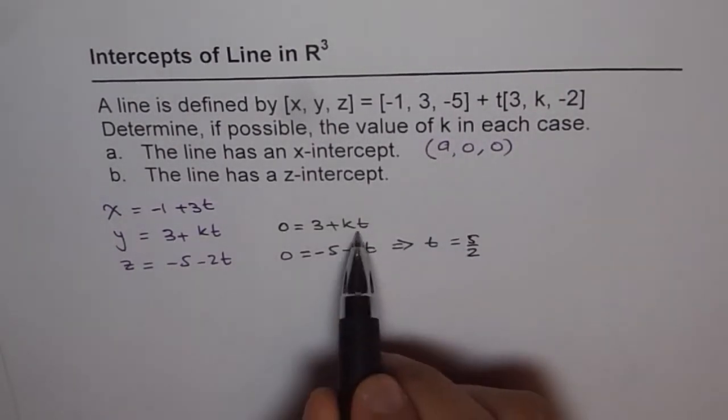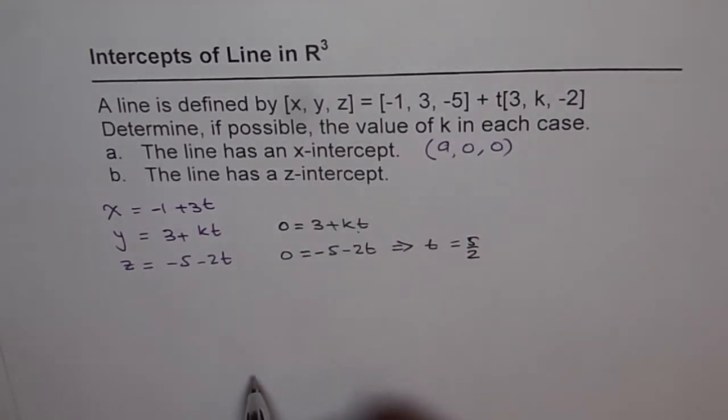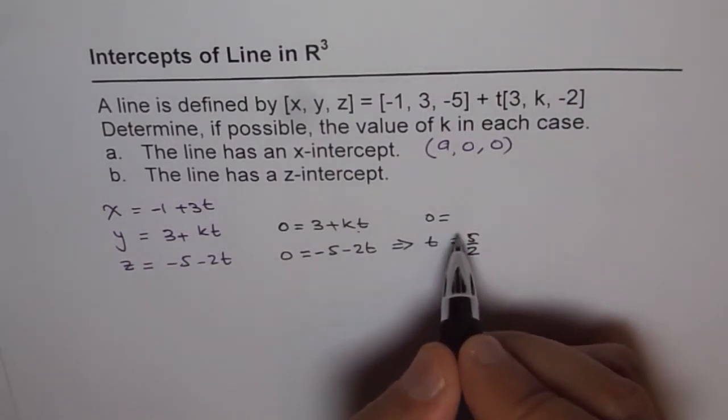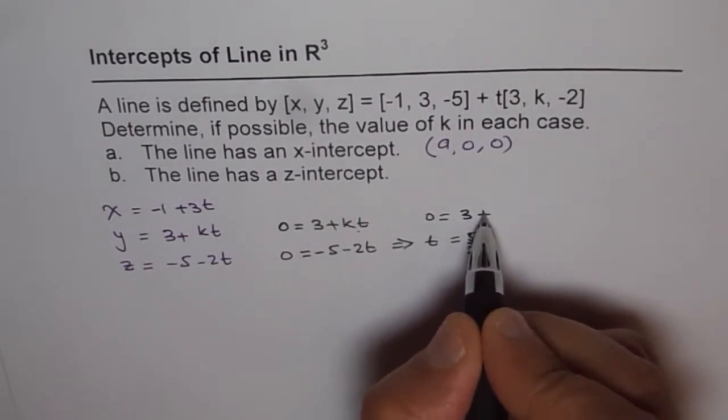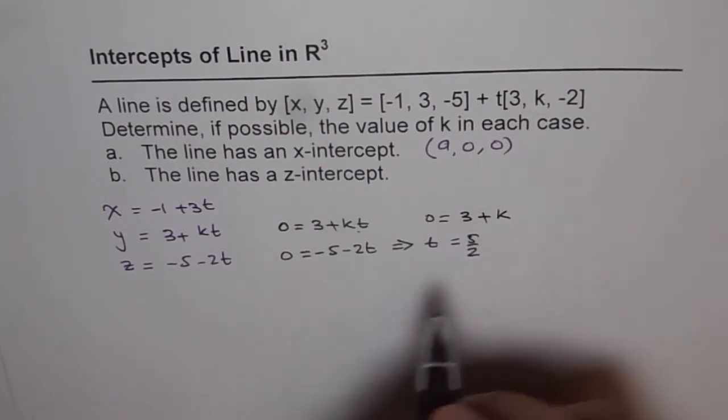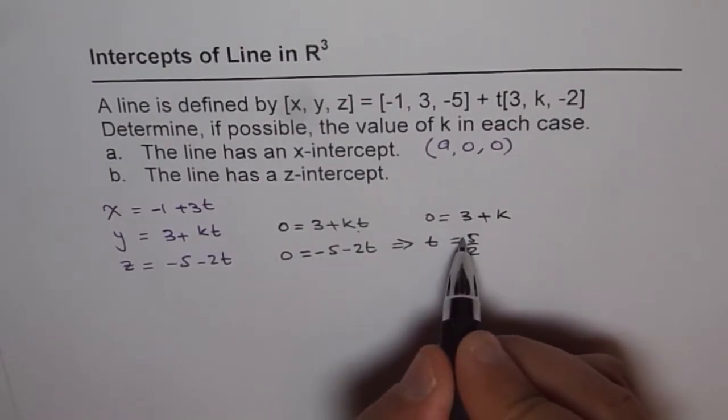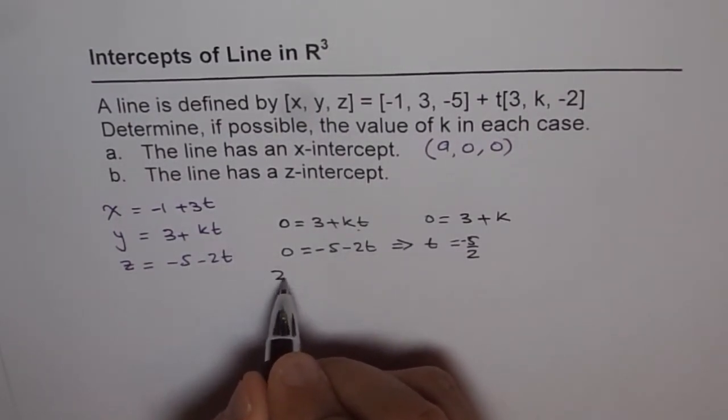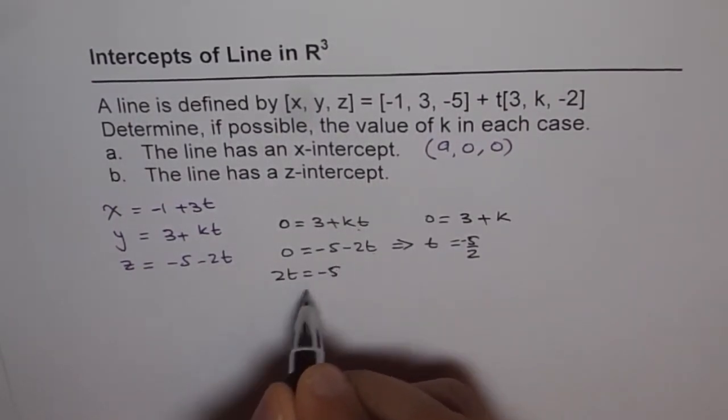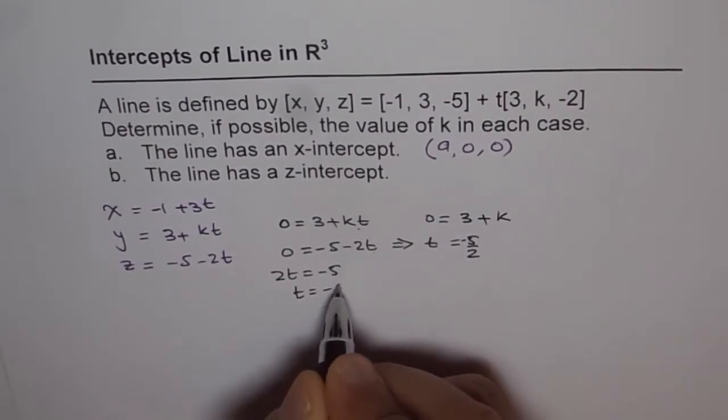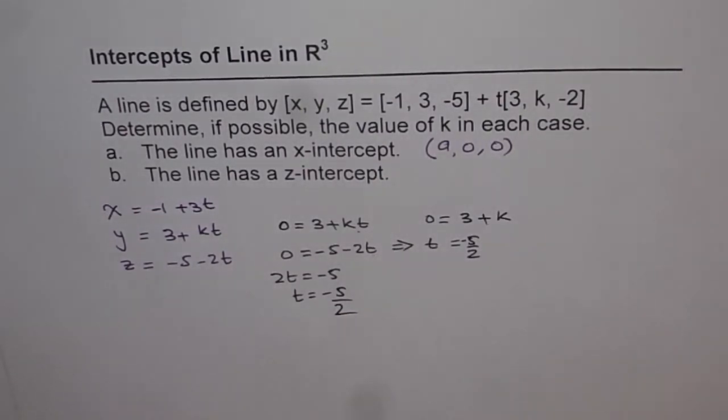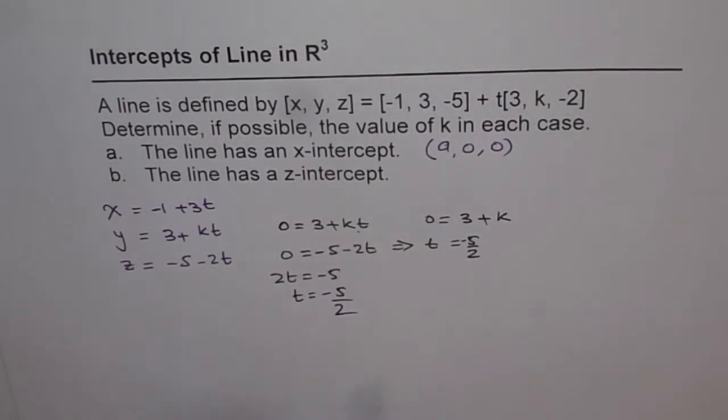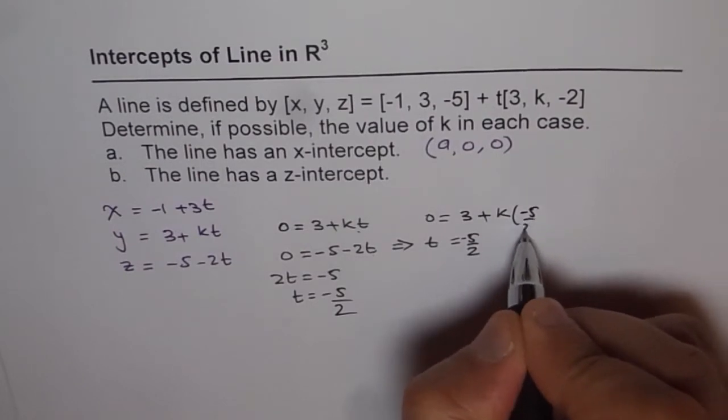Now we can substitute this value here and solve for k. So what do we get? So we get 0 equals to... we are doing both equations simultaneously. It was -5. I made a mistake here. So when we take 2t on this side, let me do it here. So 2t = -5 and t = -5/2. Now, we will substitute this value of t in the first equation.